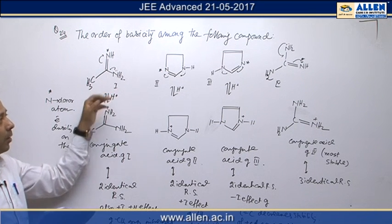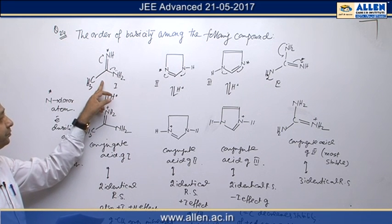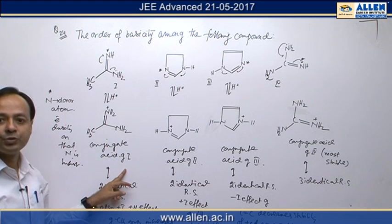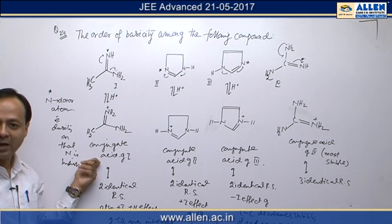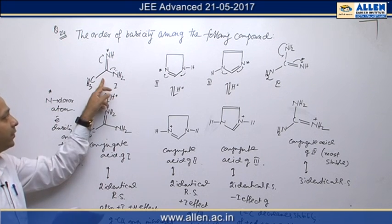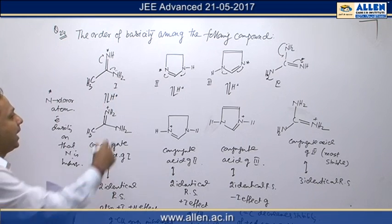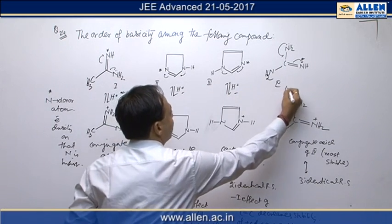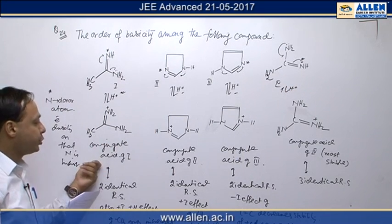Now comparing the basic strength of all the compounds, first of all we can explain it on terms of conjugate acid stability. All of us know stable conjugate acid giving more basic strength of a particular compound. And during protonations, first of all we are writing all compounds conjugate acid.